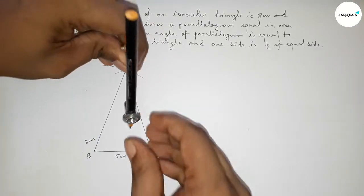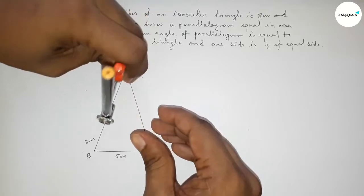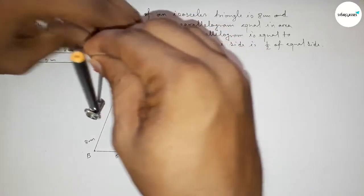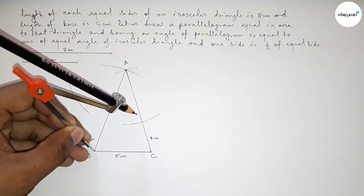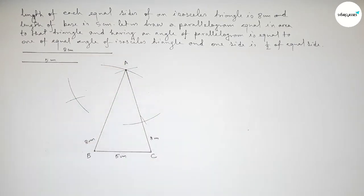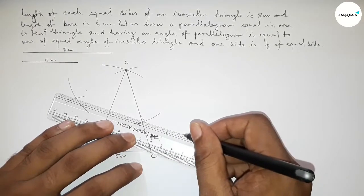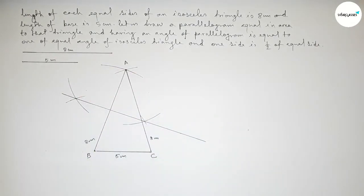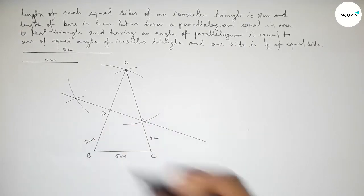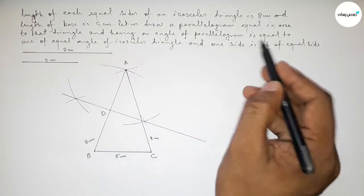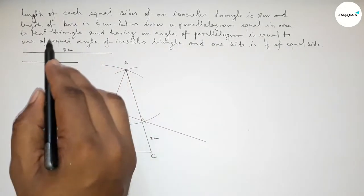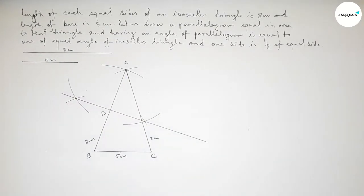To bisect line AB, we place the compass at A, taking a length greater than half of AB, and draw an arc. Then with the same length, placing the compass at B, we draw another arc. Joining the two intersection points gives us the bisector of AB. We mark point D where this bisector meets AB, so AD equals DB equals 4 centimeters, which is half of 8.